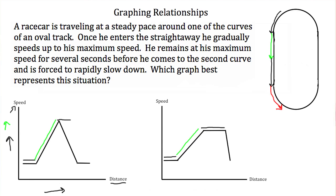And then lastly, he hits that second corner and he's forced to slow down. So his speed is decreasing as his distance increases along the track. So you'll end up with a downward sloping line, like so.